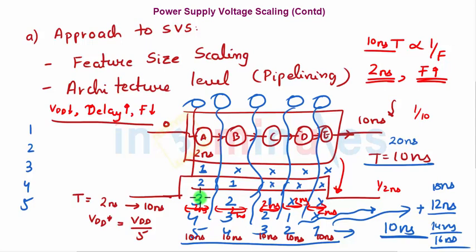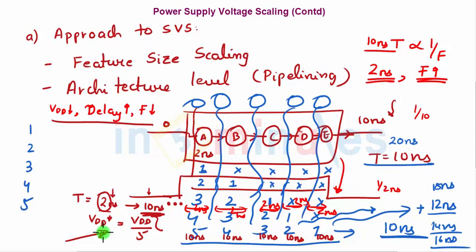Depending on the number of pipeline stages, if you are okay with the delay and don't need to improve your time period, you can exploit the relationship between delay, frequency, and VDD to reduce your supply voltage. The time period increased five times, so I give that headroom for the supply voltage to reduce by a factor of five. A fixed, reduced supply voltage is then applied — this is static voltage scaling.